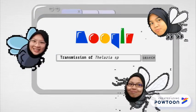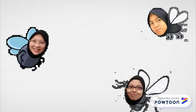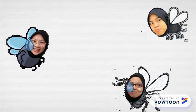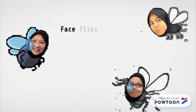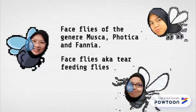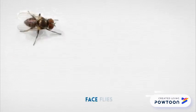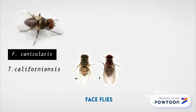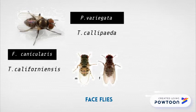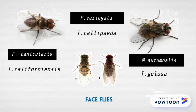Thelazia species is transmitted by intermediate host flies of the genera Musca, Fannia, and Phaonia, also known as face-feeding flies. Phaonia calicularis and Phaonia beniamini are vectors of Thelazia californiensis. Phortica variegata is a vector of Thelazia calipedia. And Musca autumnalis is a vector of Thelazia gulosa.